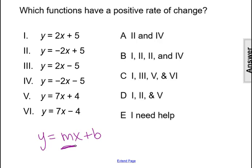The first function has a slope m = 2. Since 2 is a positive number, it has a positive rate of change. The second function has a slope of negative 2 from the coefficient of x, so that's a negative slope and a negative rate of change.